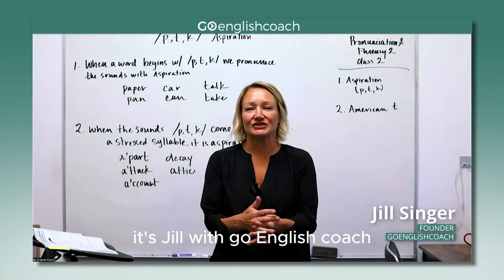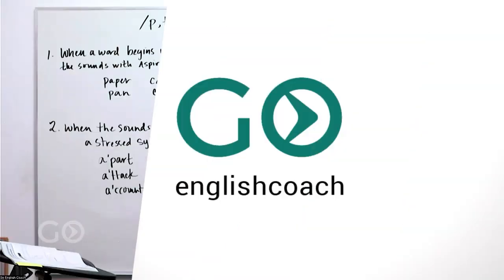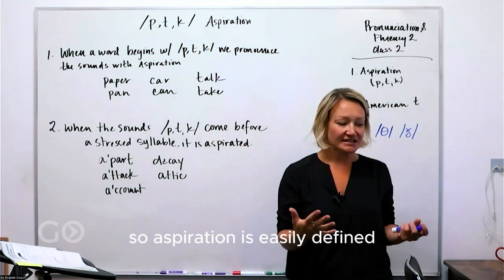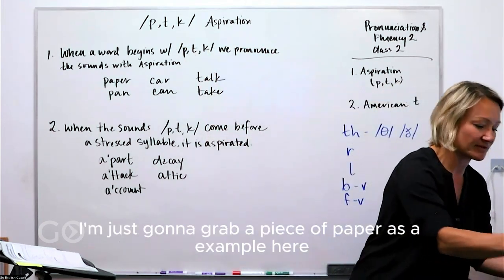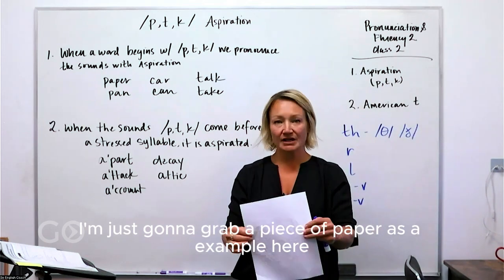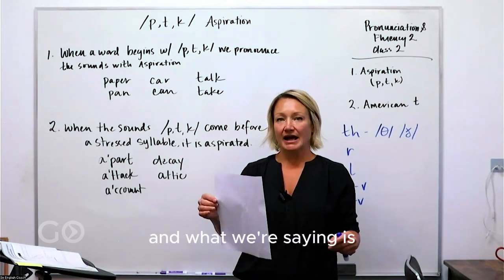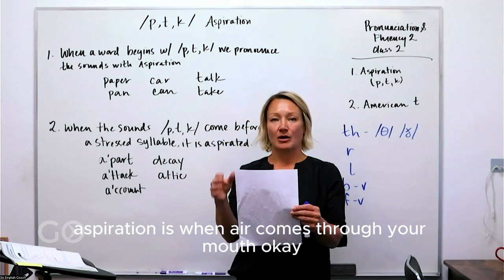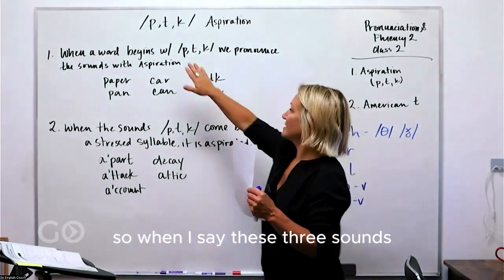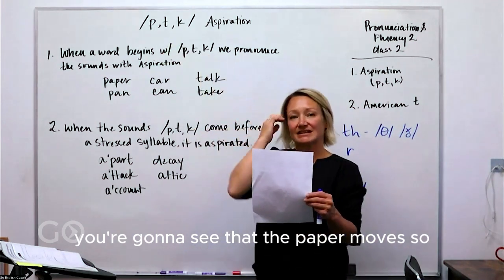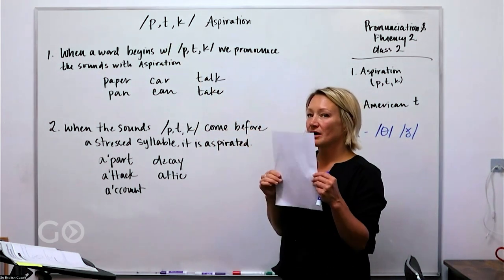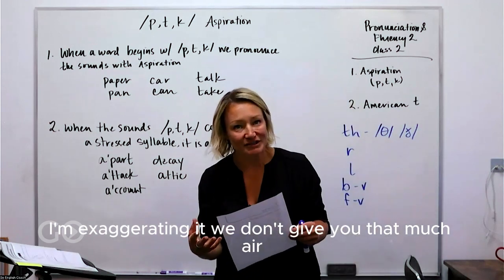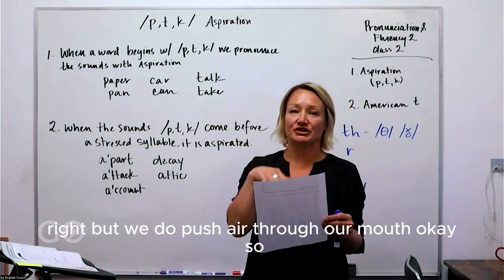Hello everybody, welcome back. It's Jill with Go English Coach. Aspiration is easily defined — I'm just going to grab a piece of paper as an example. Aspiration is when air comes through your mouth. When I say these three sounds, you're going to see that the paper moves. We don't give that much air, but we do push air through our mouth.